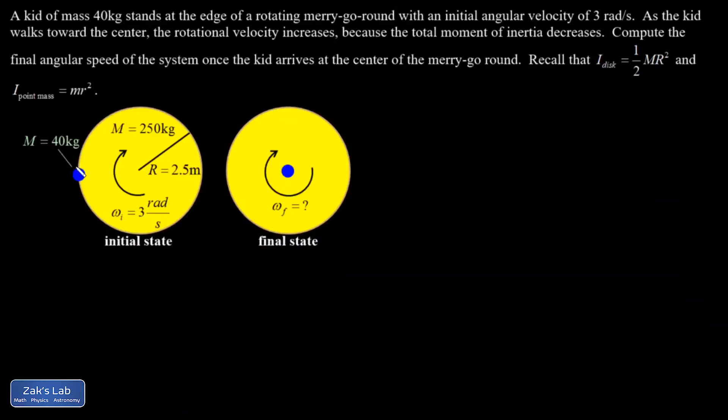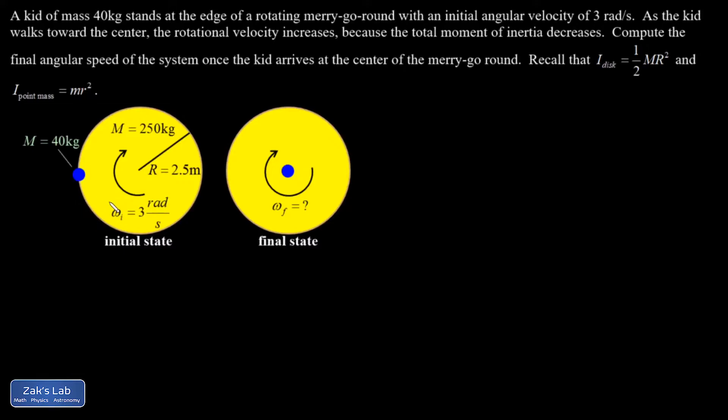In this problem, we have a kid of mass 40 kilograms on the edge of a merry-go-round that's already rotating at three radians per second, so slightly less than one rotation per second. The merry-go-round itself has a mass of 250 kilograms, radius of two and a half meters.